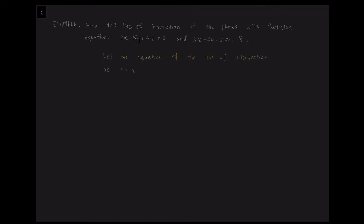Let the equation of the line of intersection be r = a + λb. From the given equations, the normal vectors are n₁ = (2, −5, 4) and n₂ = (3, −4, −2). Thus b = n₁ × n₂ = (2, −5, 4) × (3, −4, −2) = (26, 16, 7). None of the elements of b are zero, so any variable can be set to a value — most conveniently z = 0.